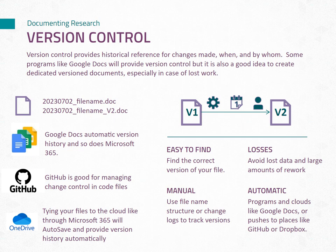Implementing version control brings several benefits to your file management process. It helps you locate the correct version of your file quickly, minimizing the risk of using outdated or incorrect information. Version control also acts as a safeguard against data loss, ensuring that previous iterations of your files are preserved. Additionally, version control reduces the need for extensive rework by enabling easy retrieval of specific versions and facilitating collaboration and documentation within your research project.